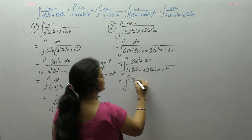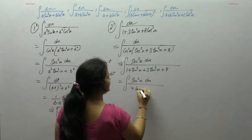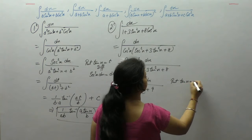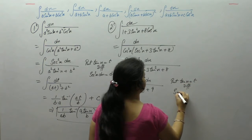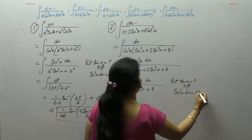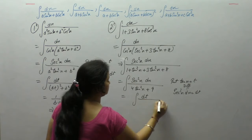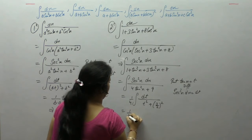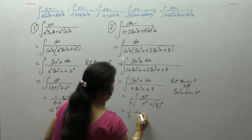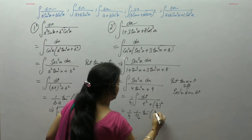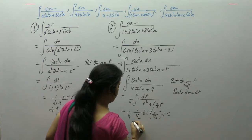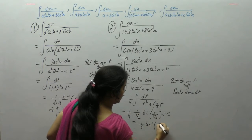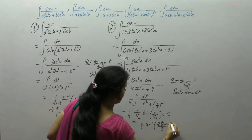The integral of sec²x gives, in the denominator: 3 plus 1 equals 4, so 4 tan²x plus 9. Put tan x as t, sec²x dx = dt. This becomes dt upon t² plus 9/4, which equals (3/2)². Using 1 upon x² plus a² equals 1 upon a tan inverse x upon a, the answer is 1 upon 6 tan inverse (2 tan x upon 3) plus c.